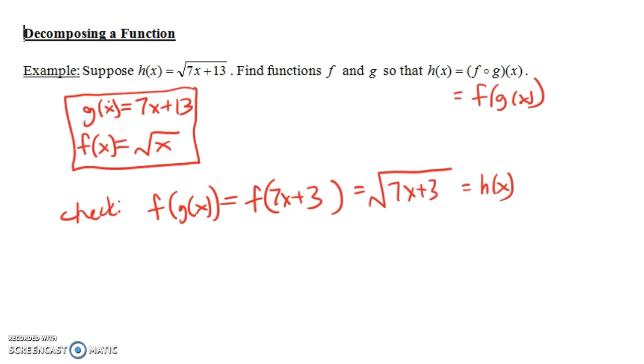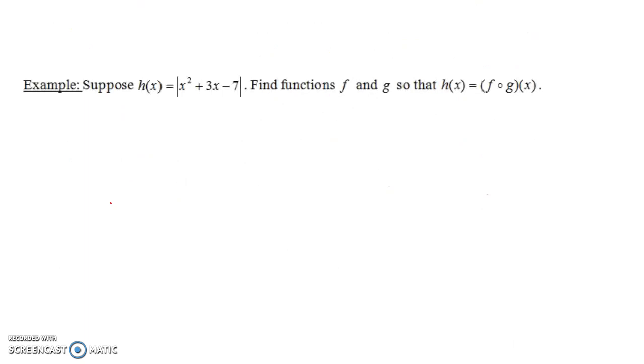By the way, you don't always get unique answers. Sometimes if you could pick something different for g and then find something different for f, that would still work. So these answers are not unique, but I think this is the most obvious way of doing it in this case. Let's try another example.